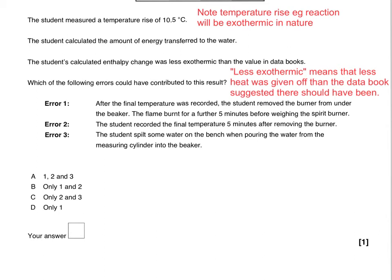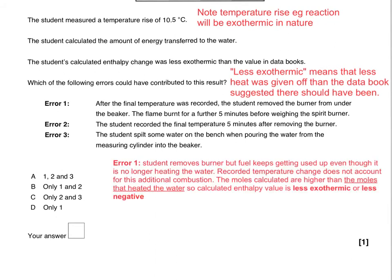The question asks you to look at three errors — it's a multiple choice question with four different combinations. The way to approach it is to look at each error in turn and carefully think about what effect that mistake has on the overall temperature change. In the first error, the student removes the burner but the fuel keeps getting used up even though it's not heating the water anymore. This means the recorded temperature change doesn't account for this additional combustion. The moles calculated are higher than the moles that actually heated the water, so the calculated enthalpy value is less exothermic — less negative. Notice: less exothermic rather than just saying it's lower.